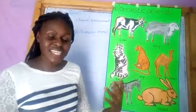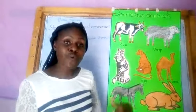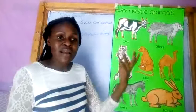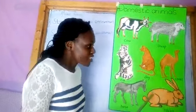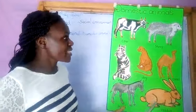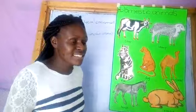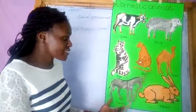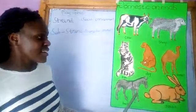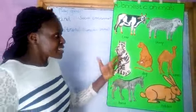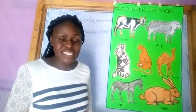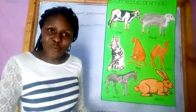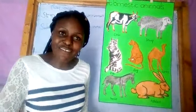When we have these domestic animals, we are supposed to take care of them by giving them water. Some of them need grass, and some of them, like a dog and a cat, need food. We are supposed to look after them and take care of them. Thank you and hope you have enjoyed our lesson.